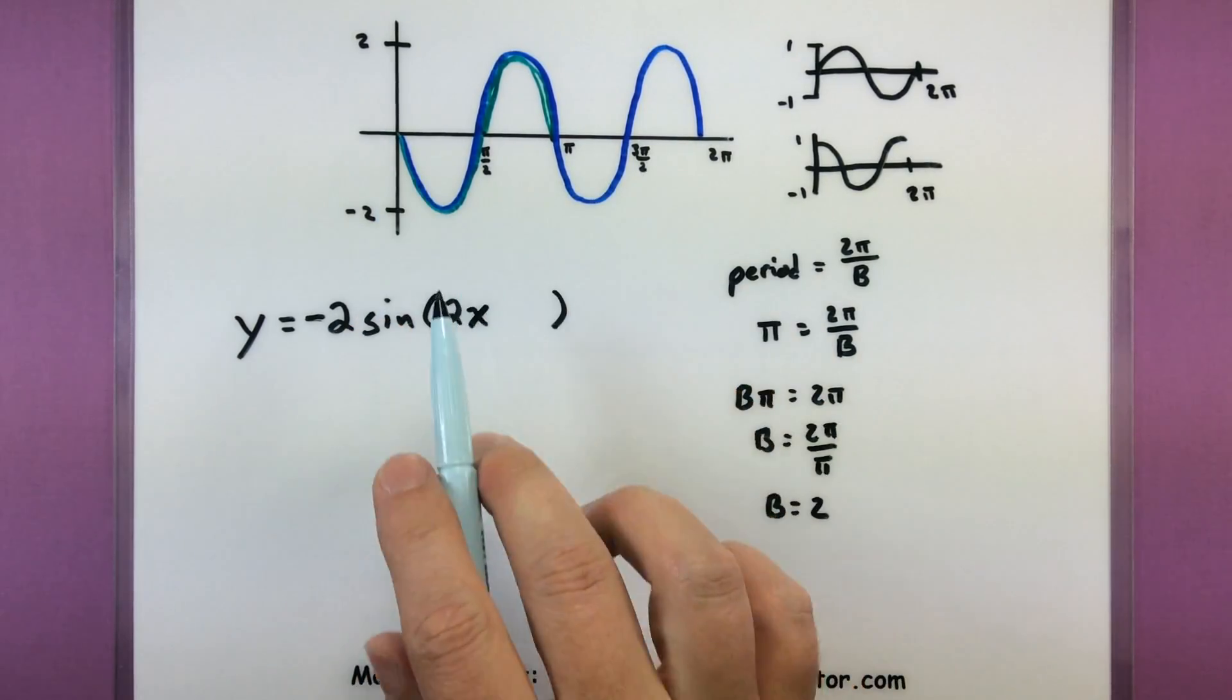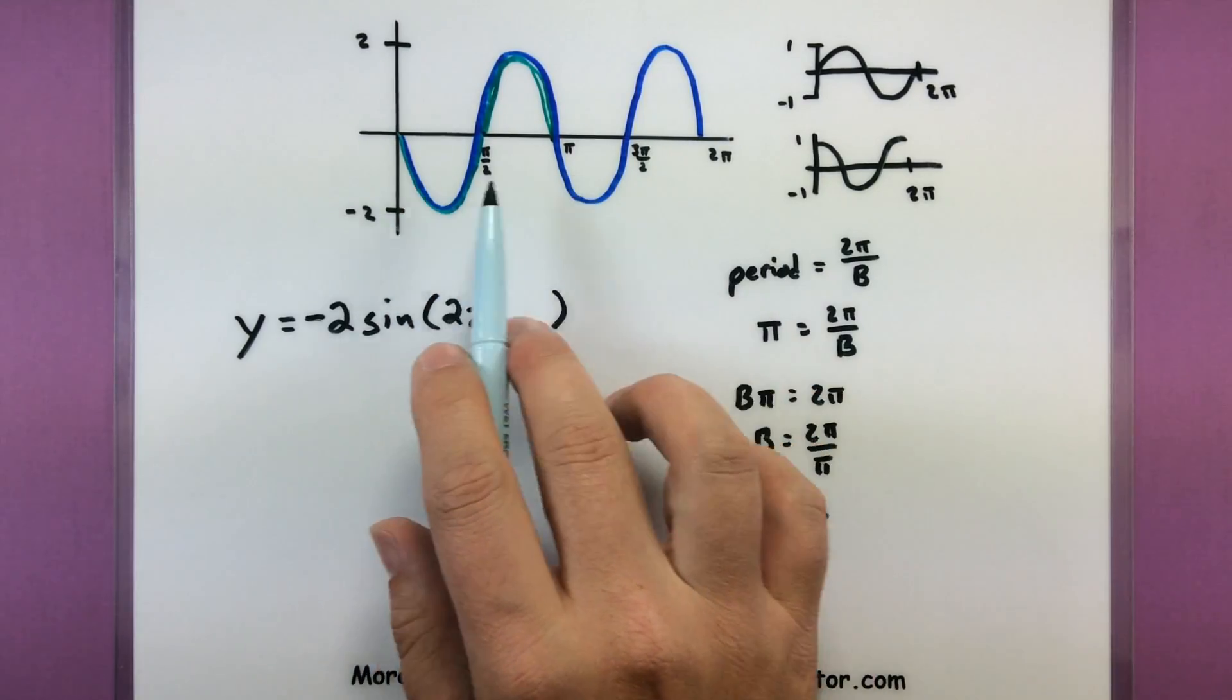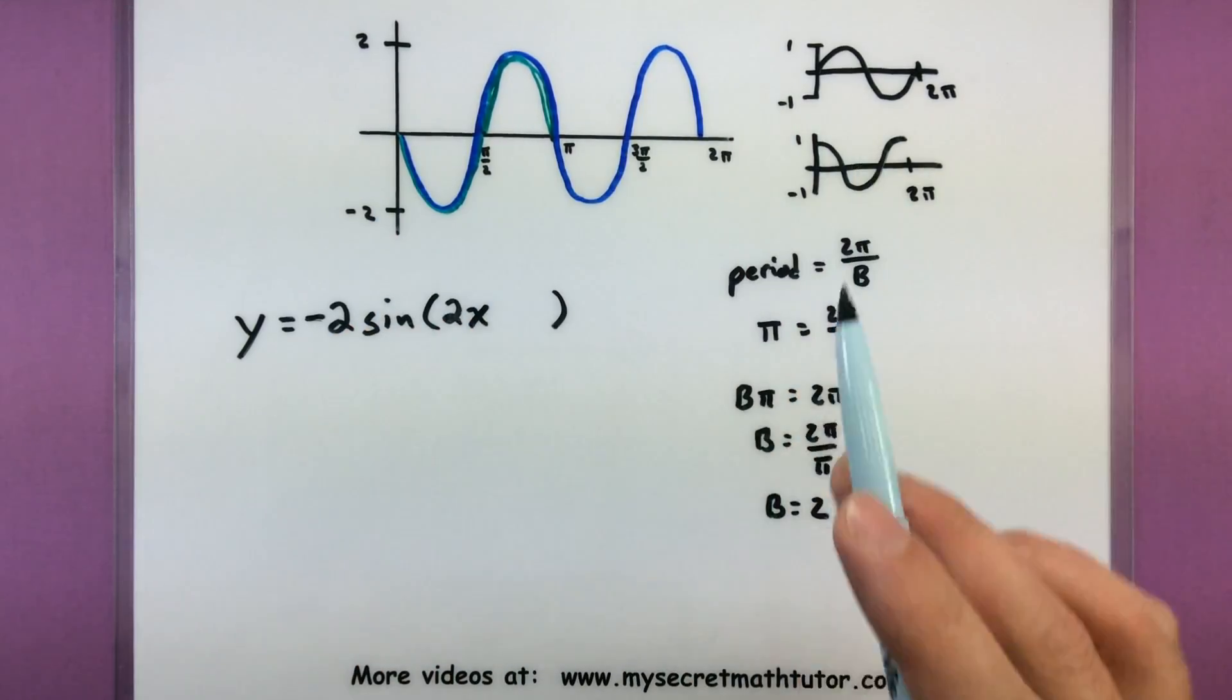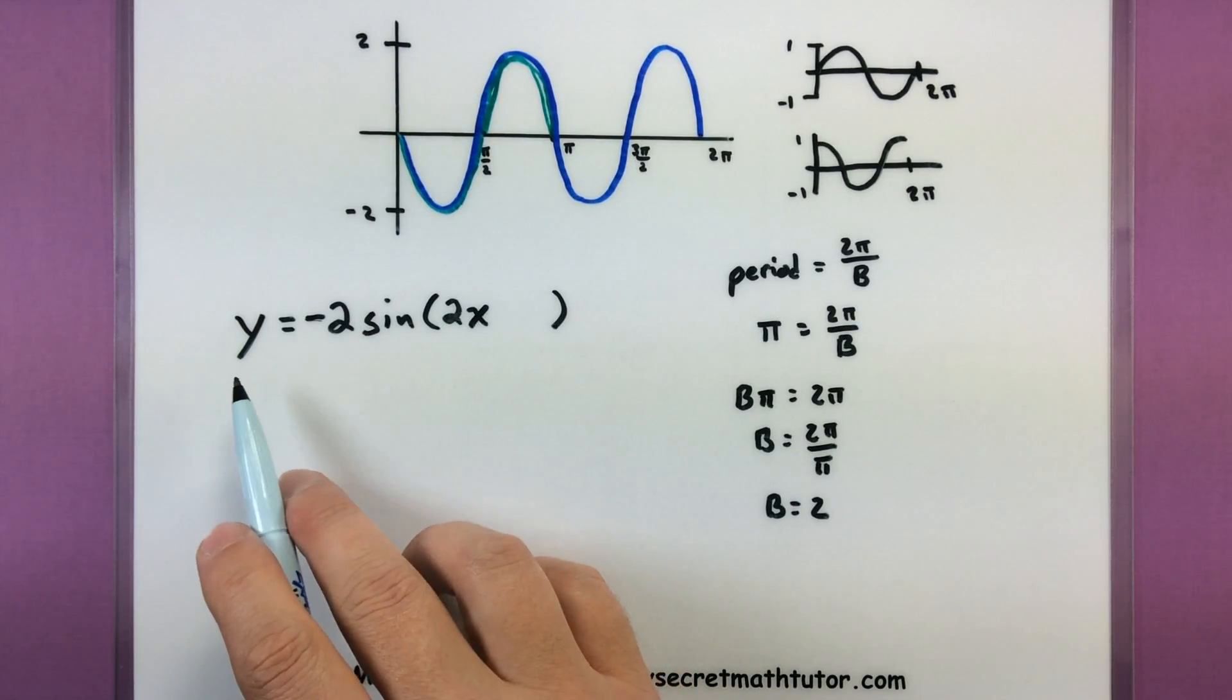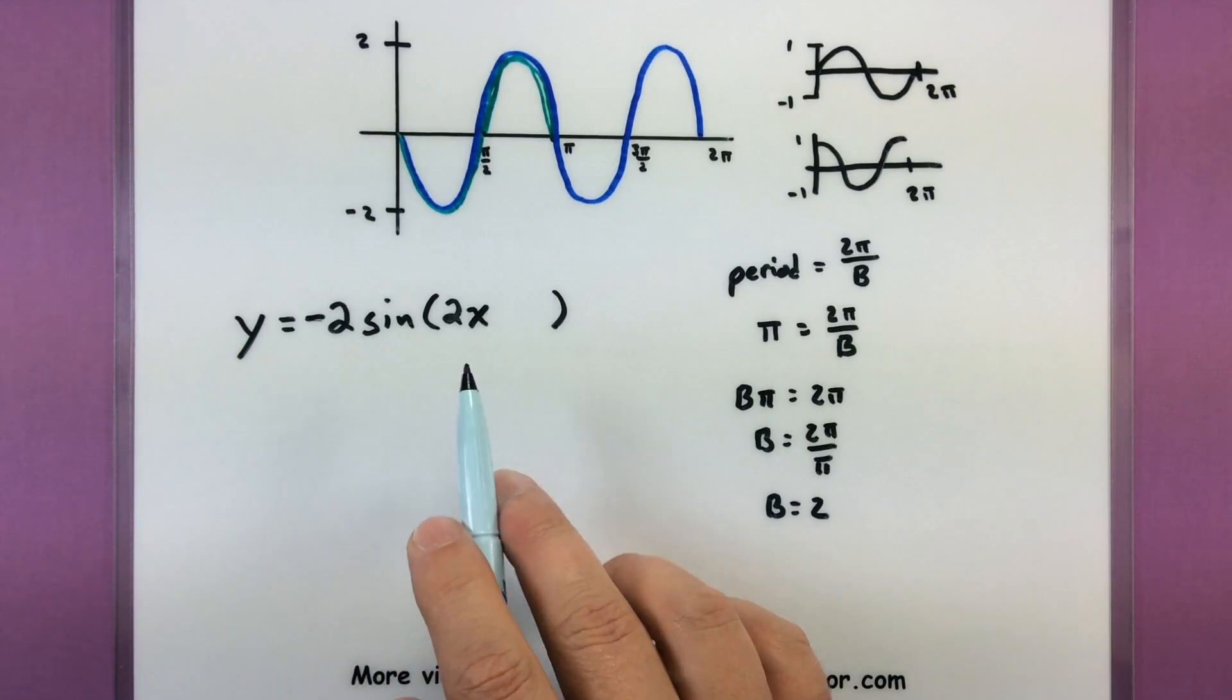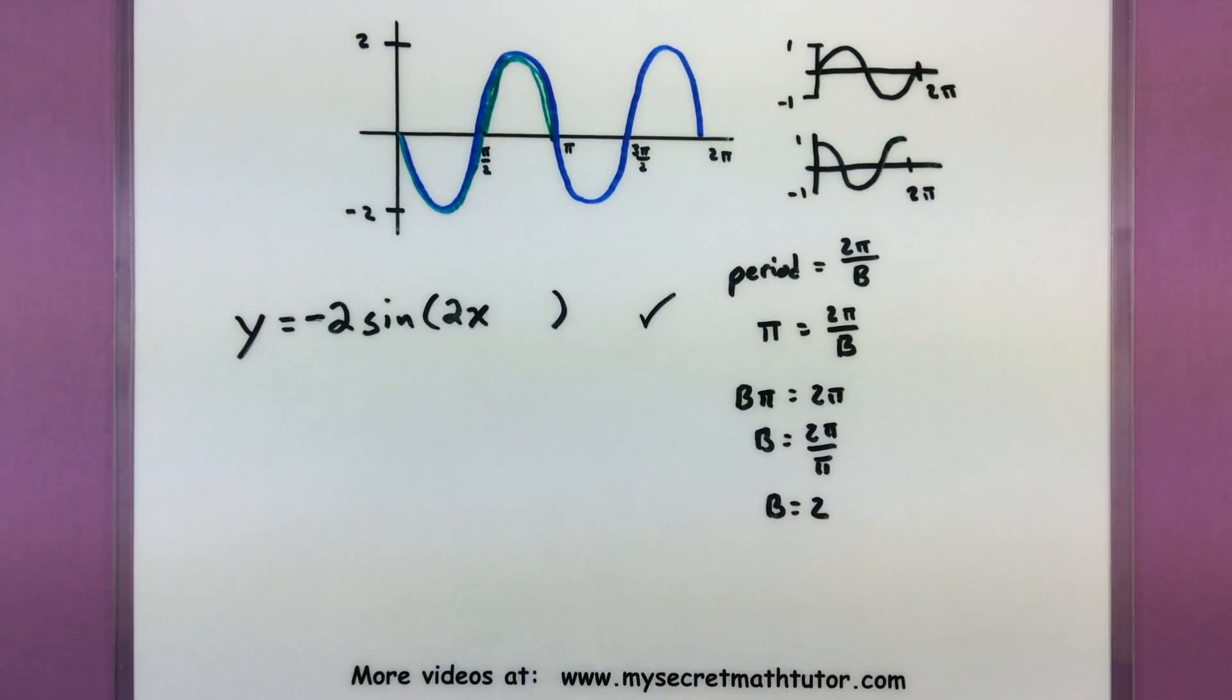One last thing that'd be a phase shift. This starts at zero so there hasn't been shifted left or right any. So this is actually perfectly good. We'll just keep this as y equals negative two sine of two x. And we have our equation.